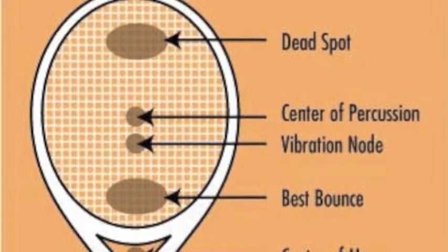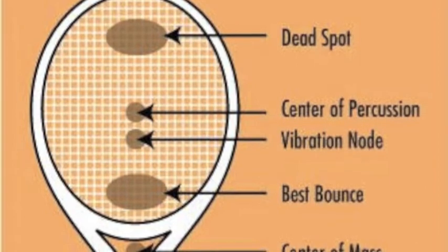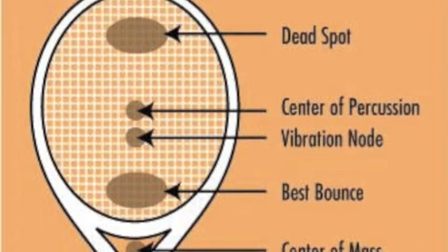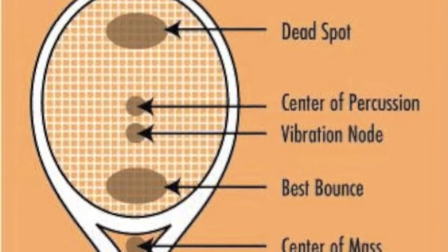The spots on a racket include a dead spot, a node, center of percussion, and an area for the best bounce. The ball hitting the racket produces vibrations, and hitting the ball on a node will decrease the amount of vibration translated to our hands.